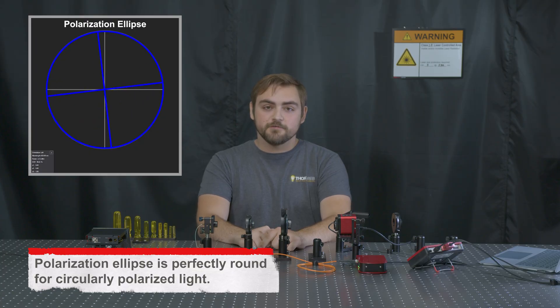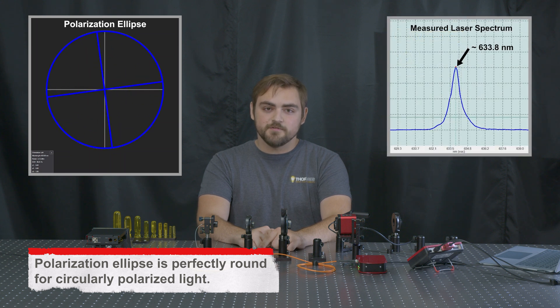With the polarimeter, we can confirm we are getting circular polarization. We can also check the spectrum to see the exact wavelength we're getting the true quarter wave out of our wave plate.